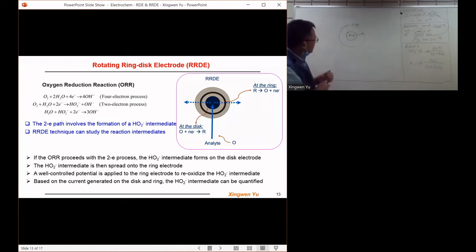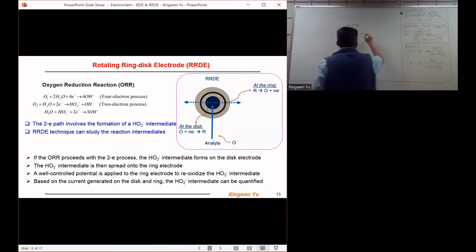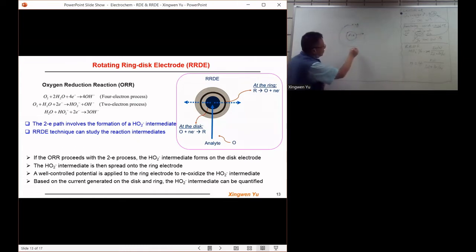In this case, based on the information of the current density generated from the ring electrode, IR, and the current density generated from the disk electrode, ID.